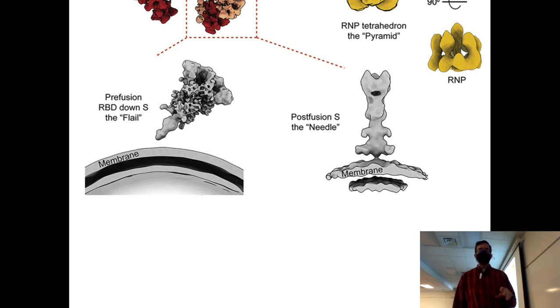You see how the trimer works out? That's actually three S proteins put together. And that's with the RBD down. The RBD is the receptor binding domain. This is the kind of background that you need to look at that paper. You have the pre-fusion shape. It's very different from the post-fusion shape. The flail is pre-fusion. And then it becomes the needle, post-fusion.